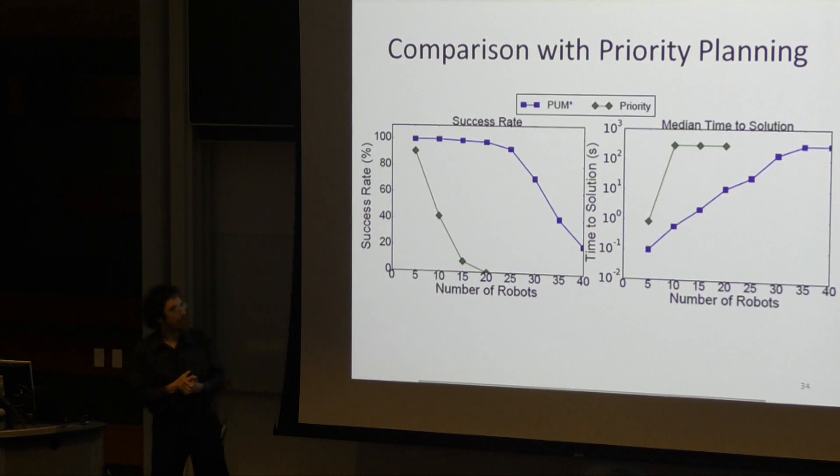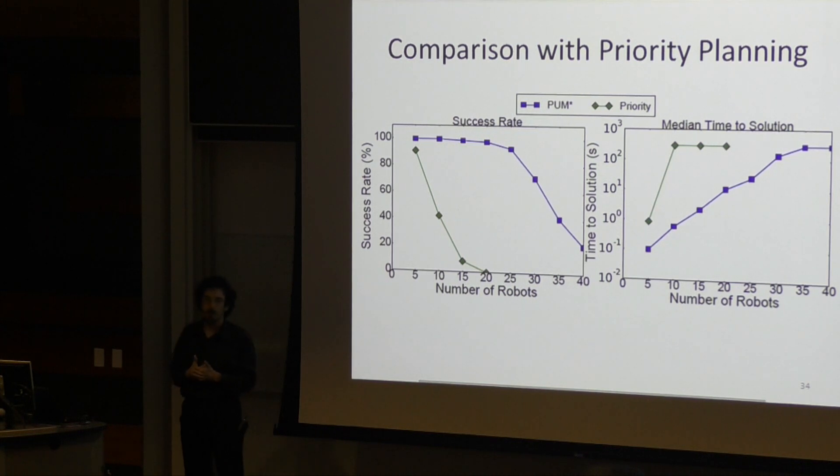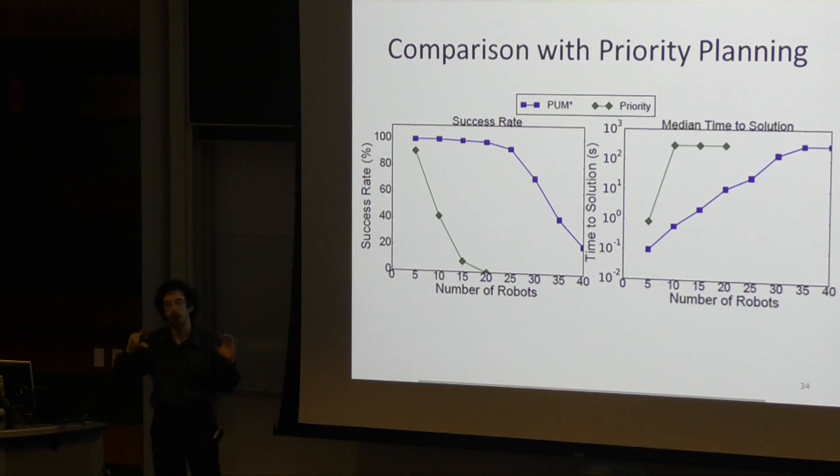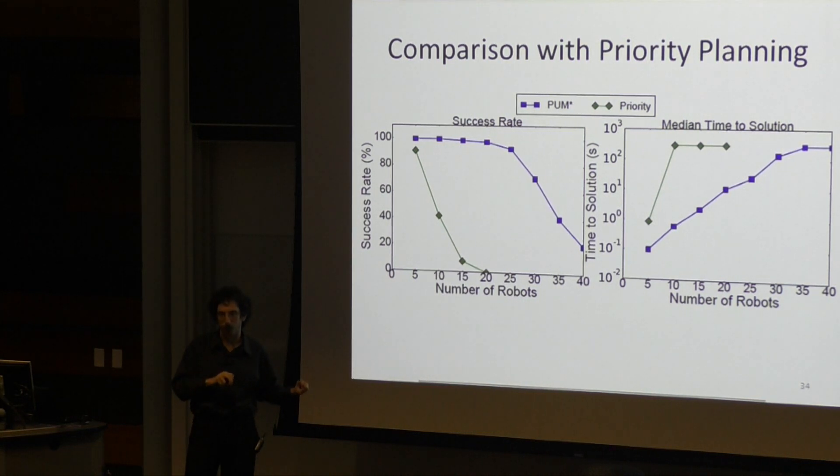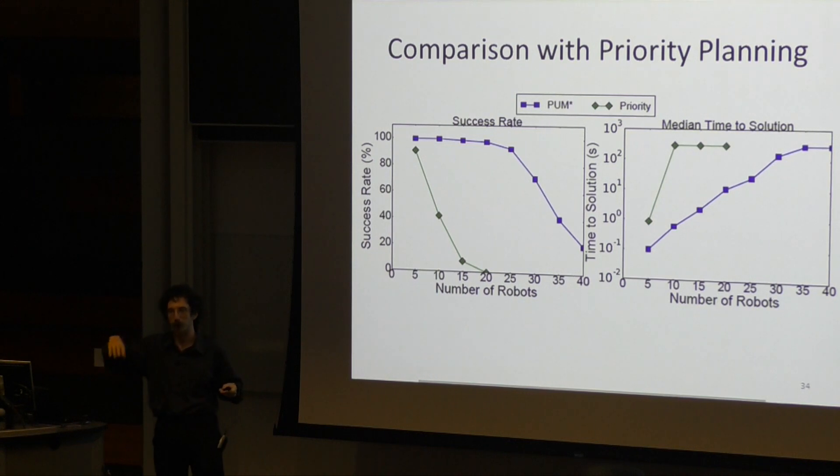The next question is, is mucking around with MSTAR type stuff actually worth it? Vandenberg has done a little bit of primitive belief space planning using priority planners for multi-robot systems. So we decided to compare against a basic priority planner where you plan for one robot, fix its path, plan for the next, and so on and so forth.